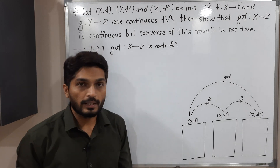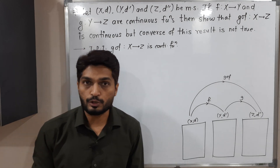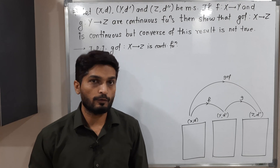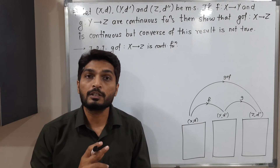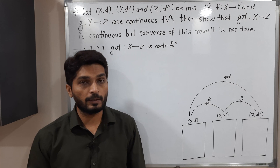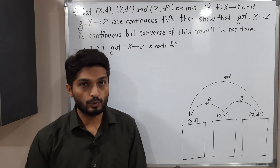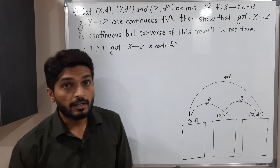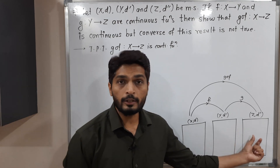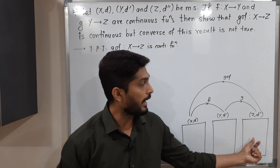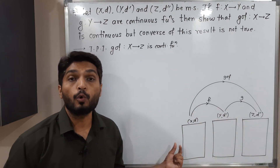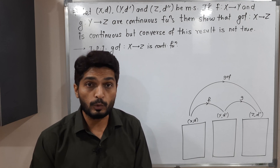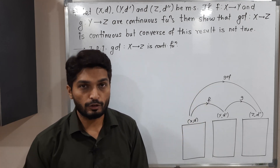There are several ways and several definitions to prove a function is continuous. We have the epsilon-delta definition of continuity and the sequential criteria of continuity. There is also one result: if you have any open set in the co-domain and its inverse image is open in the domain, then the function is continuous. I am going to use that result to prove G composite F is continuous.